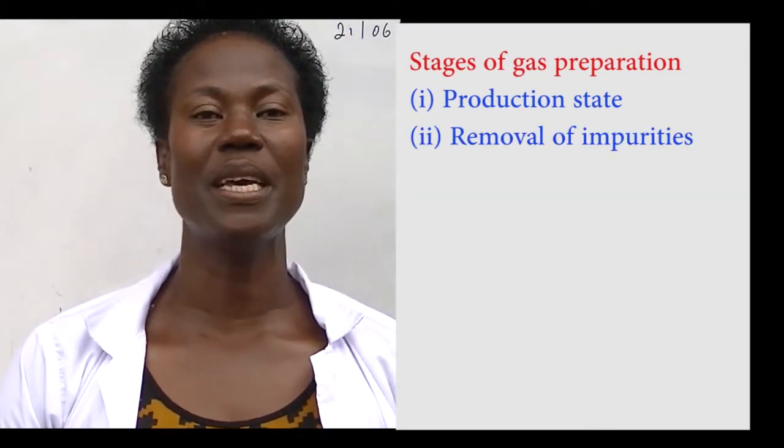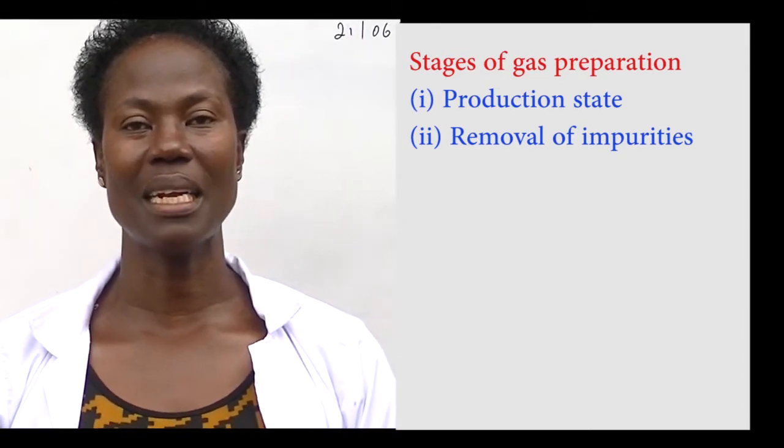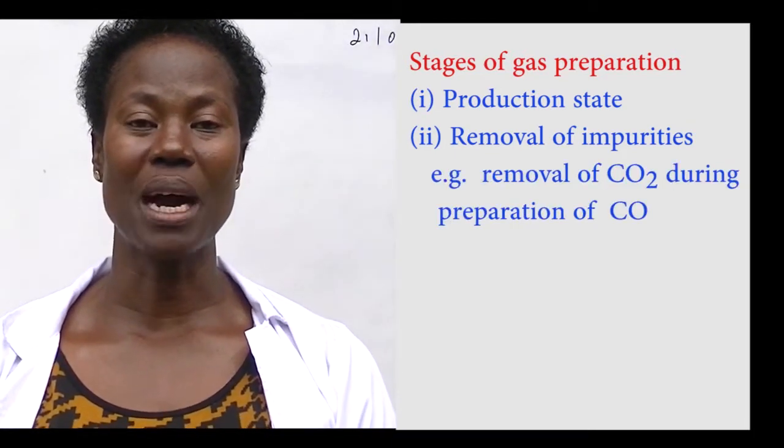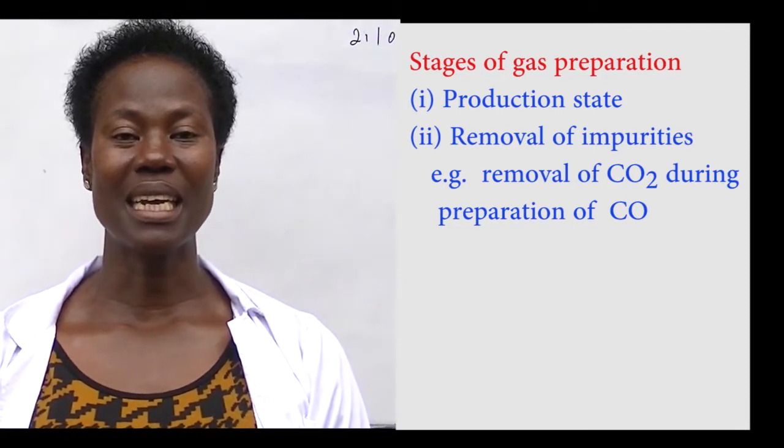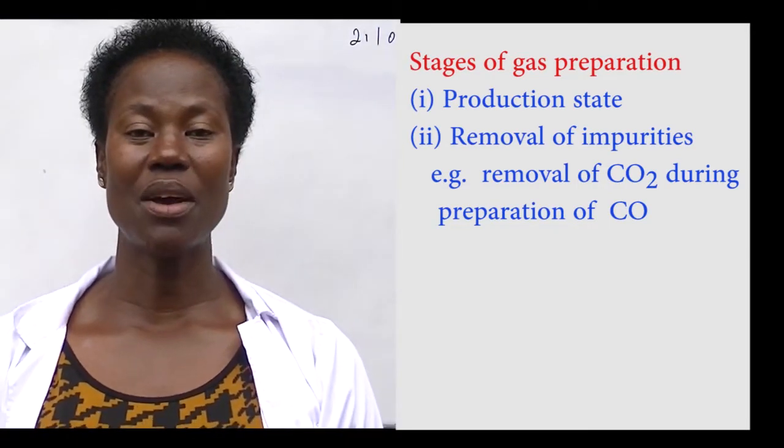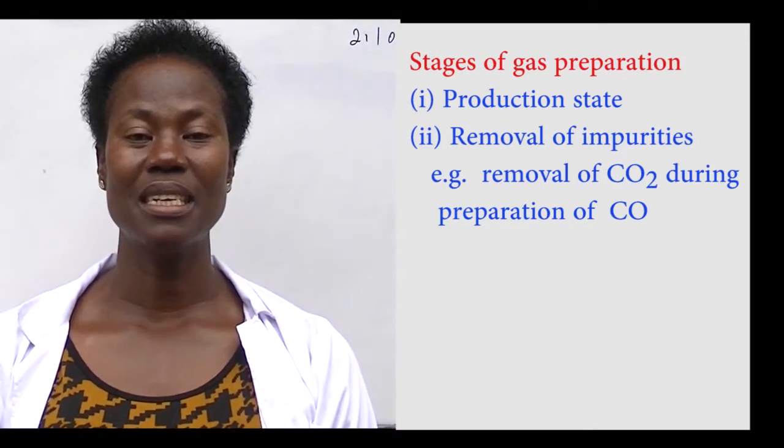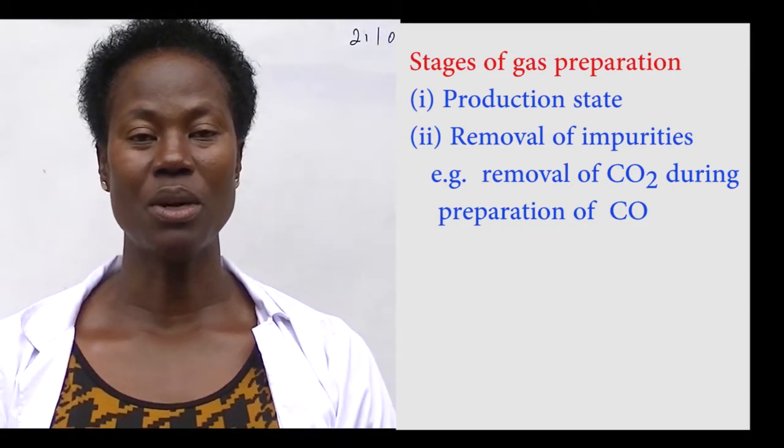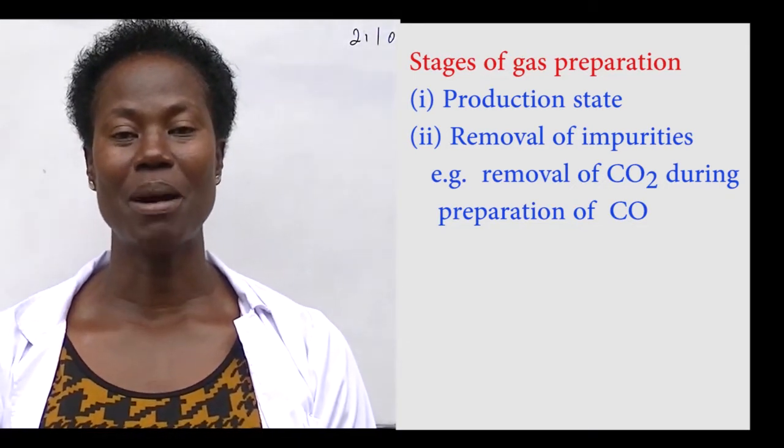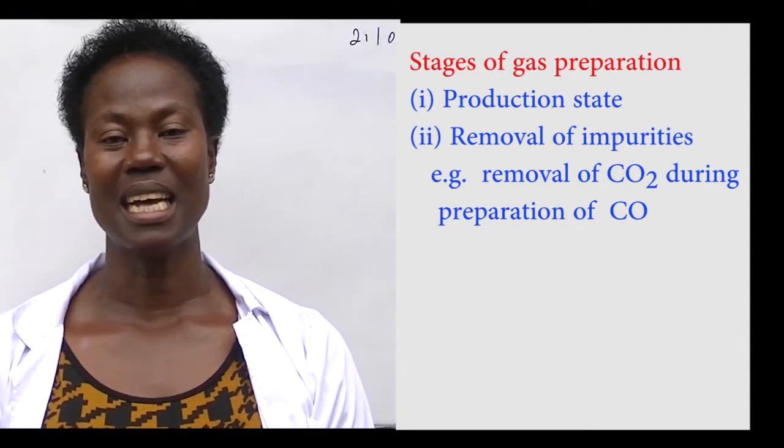The second stage is the removal of impurities. Some gases when prepared come along with impurities that are removed first. An example is the laboratory preparation of carbon monoxide whereby oxalic acid is reacted with concentrated sulfuric acid during the reaction. Carbon dioxide is the impurity which is removed by bubbling the gases through concentrated sodium hydroxide that absorbs carbon dioxide. Then we continue to the next stage which involves drying it by bubbling it through concentrated sulfuric acid and then it can be collected at the other end.